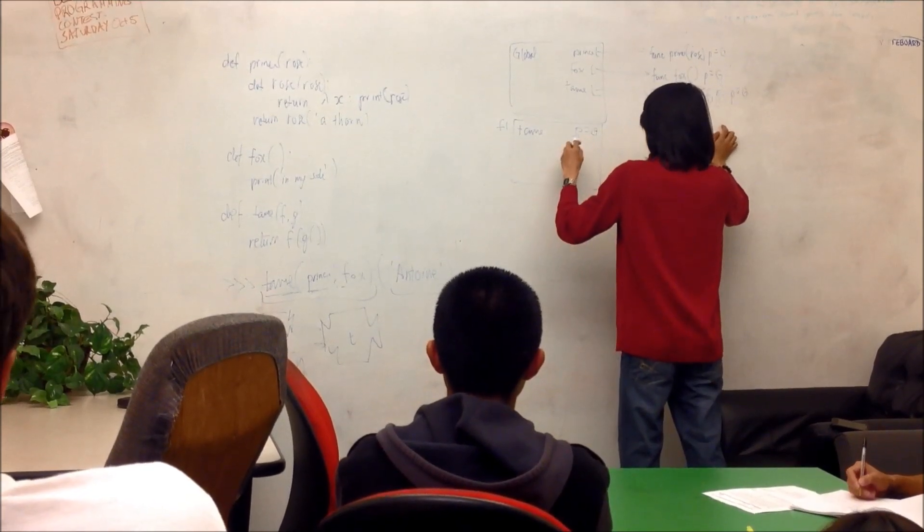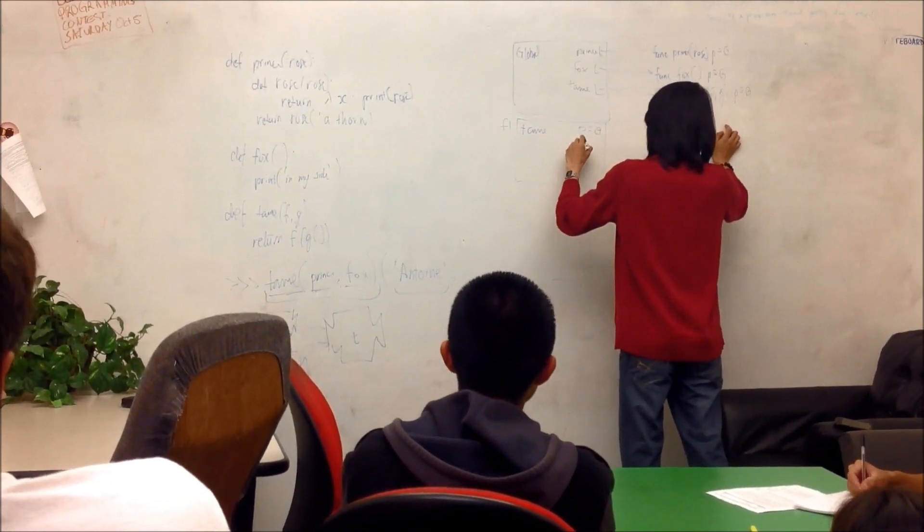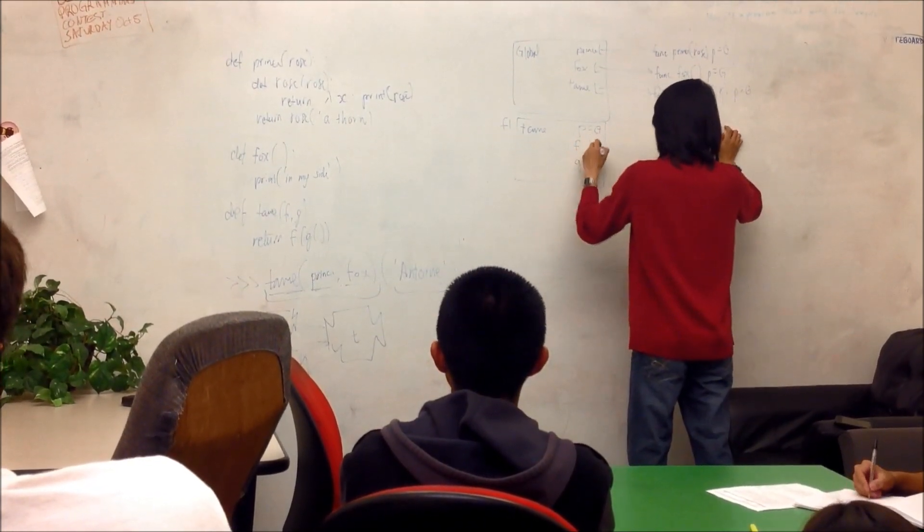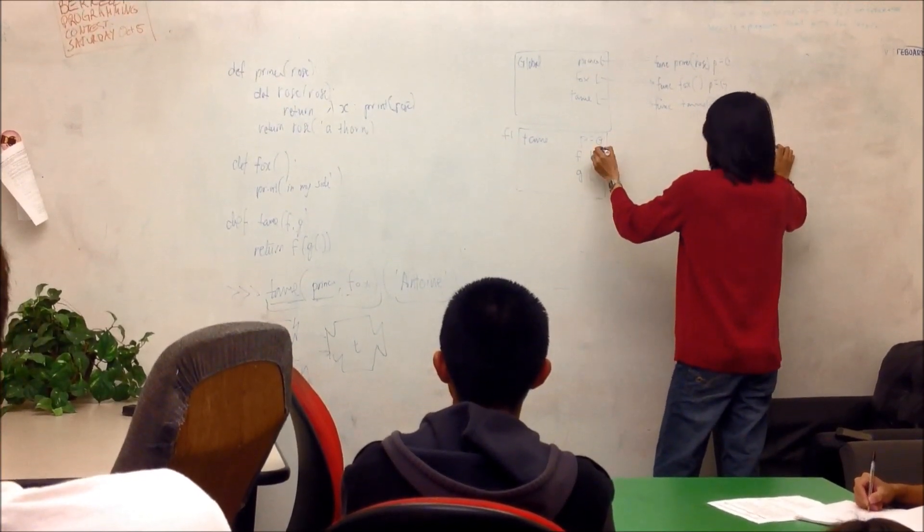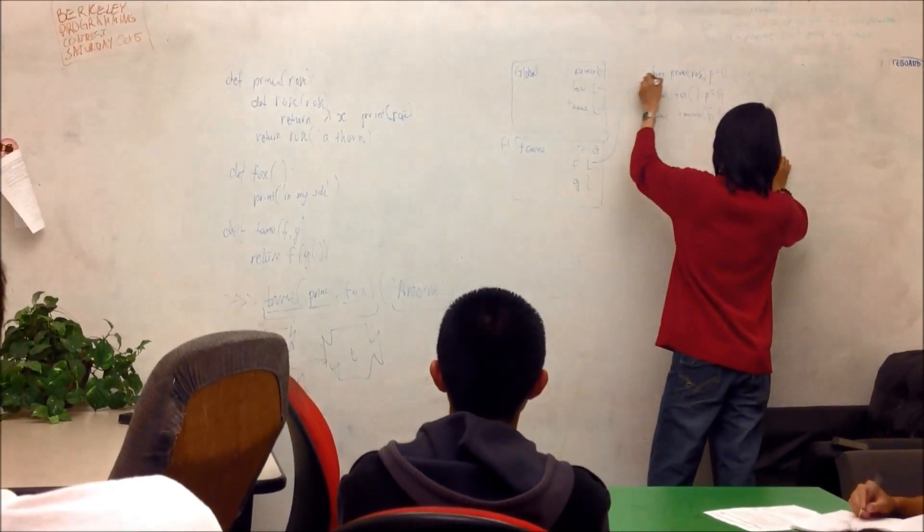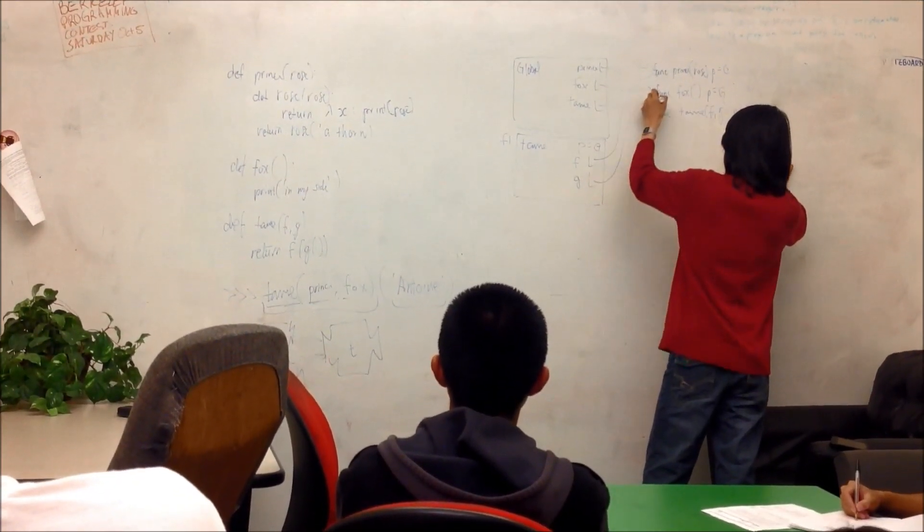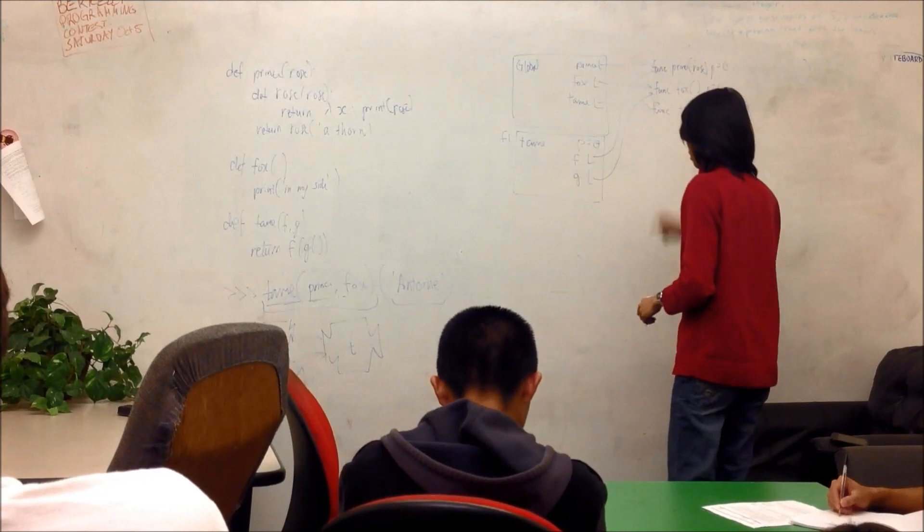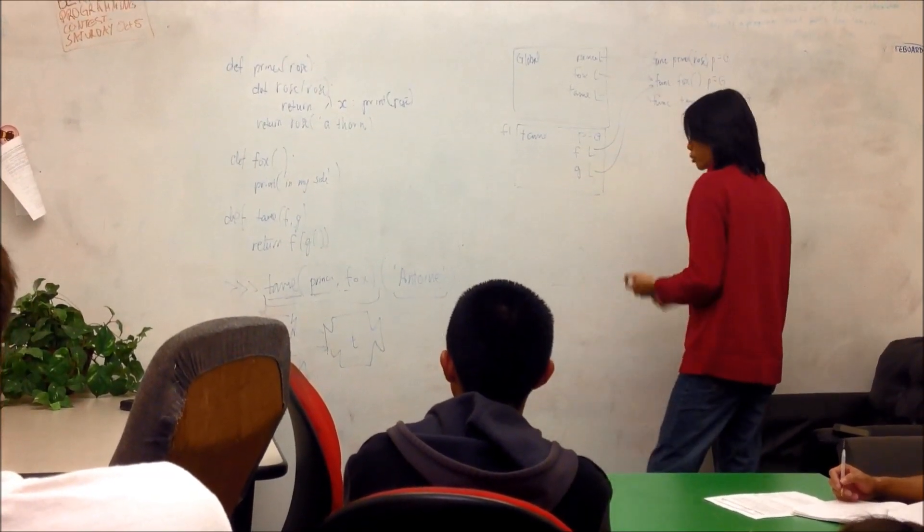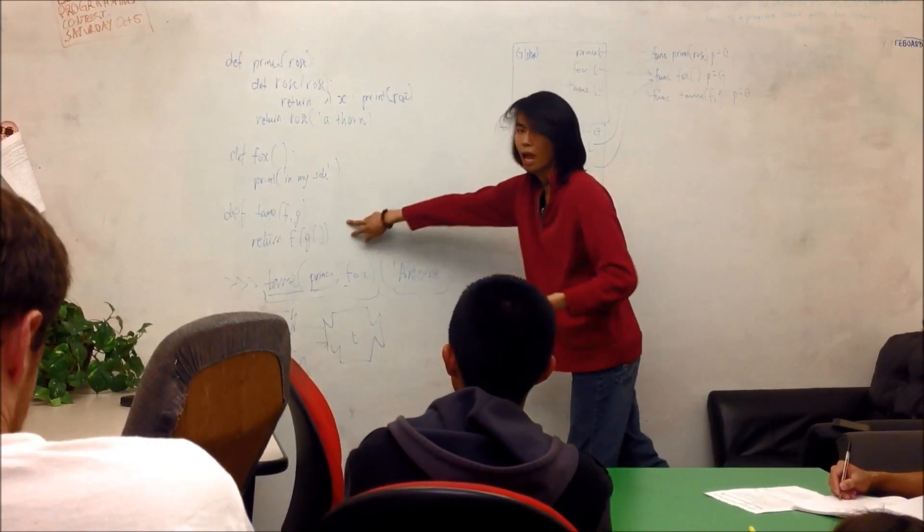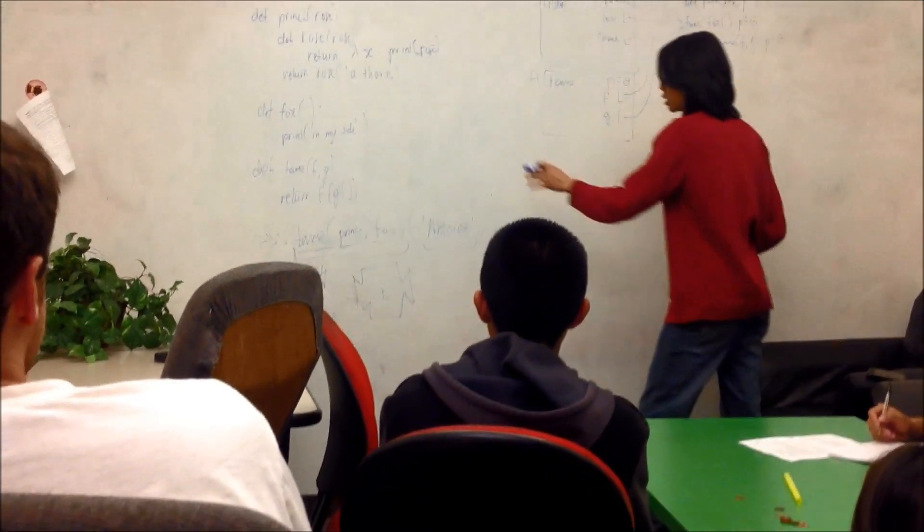Then I say, okay, tame takes in two things, an f and a g. Well, since I've already evaluated them, I know that f points to whatever the value of prince was, which is this thing. And g points to whatever the value of fox was, which is this thing. And then I evaluate the body of the procedure. So tame says return f of g being called.